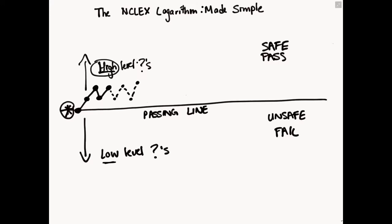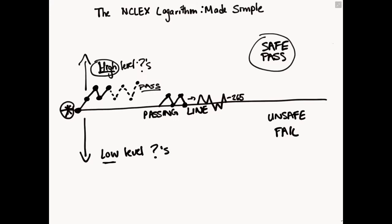Once you're two levels above the passing line, you could theoretically get every other question right and wrong and still pass because you never drop below the passing line. However, if you get the first question right, then the next wrong, and keep going up and down without consistently staying above the line, the computer cannot decide whether you are safe and competent. You could also get into a series of incorrect answers and never get back above the passing line, which results in a fail.